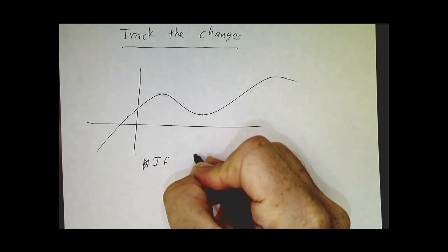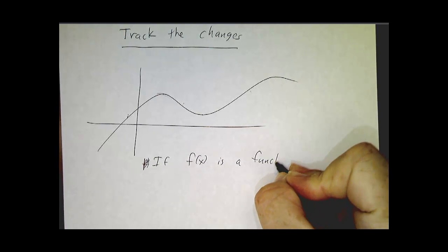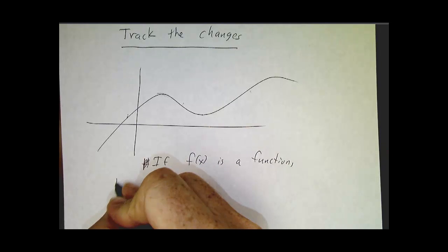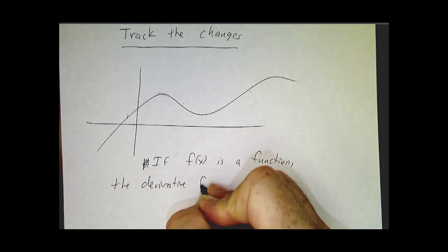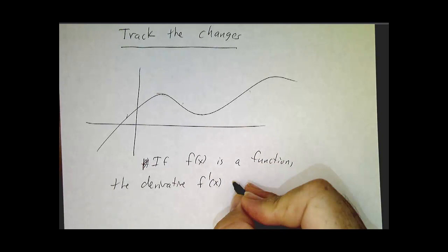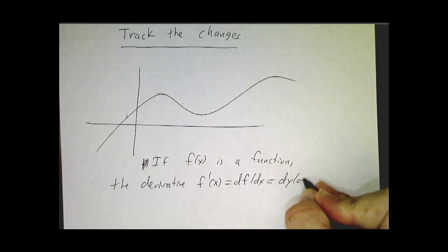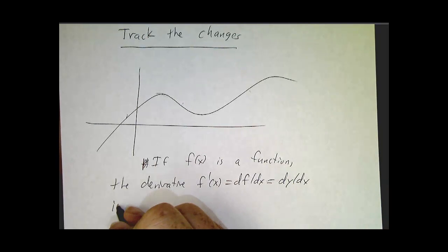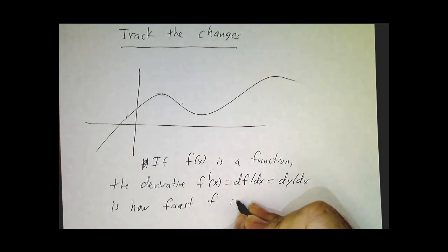So if f is a function, the derivative, which we write f prime, or sometimes we write it as df dx, they all mean the same thing, is how fast f is changing.